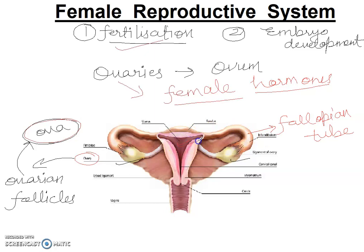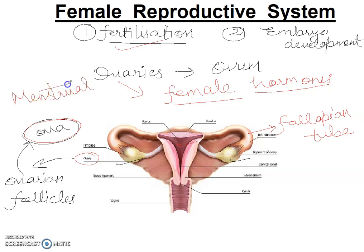The egg travels to the uterus, where the implantation process occurs. If sperm is present, fertilization gets started. When fertilization happens, the menstrual cycle stops. If fertilization does not happen, menstrual flow will occur.